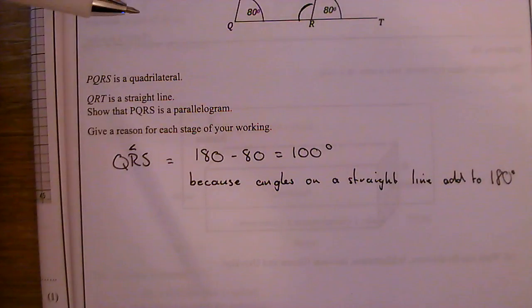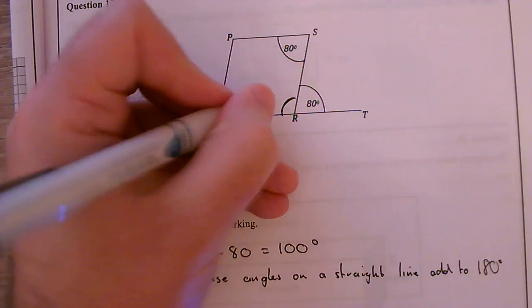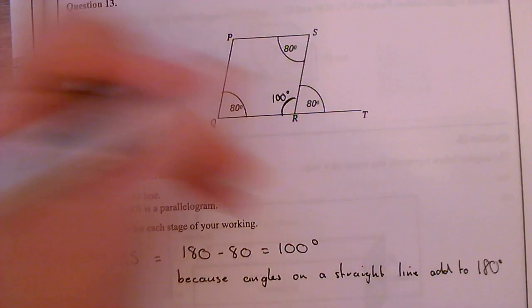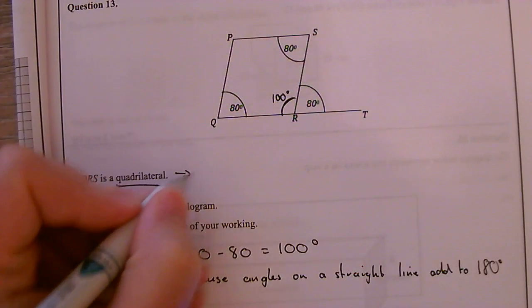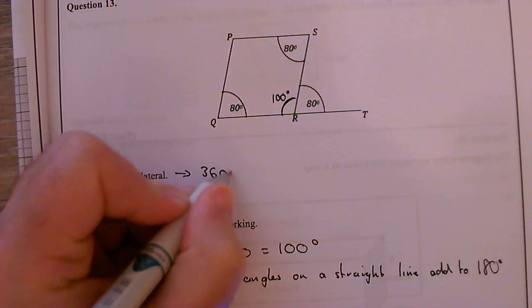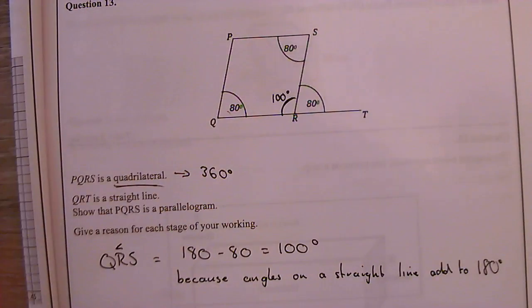OK, the next thing I need to consider is how can I prove that this is a parallelogram. Well, I know this angle here is 100 degrees. It's a quadrilateral, and I know that the angles in a quadrilateral add up to 360 degrees. So I've got three of the four angles there.